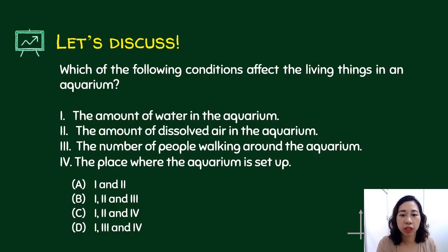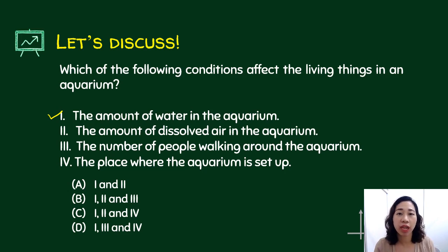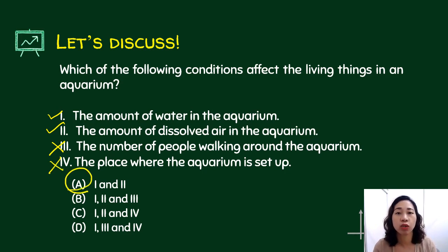Which of the following conditions affect the living things in an aquarium? Statement one: the amount of water — yes, because if you have less water, you cannot hold as many living organisms. Statement two: the amount of dissolved air — of course, they need air. Statement three: the number of people walking around the aquarium — that does not really matter. Statement four: the place where the aquarium is set up — whether in the kitchen or living room, it doesn't matter. So the answer is just one and two, hence the answer is choice A.